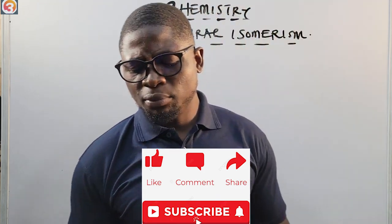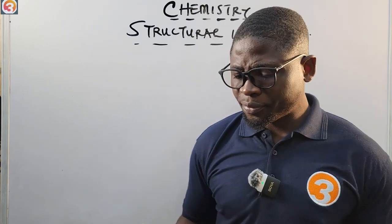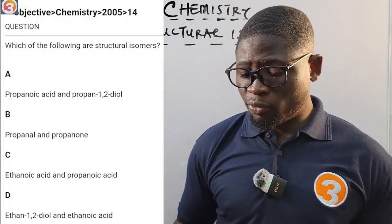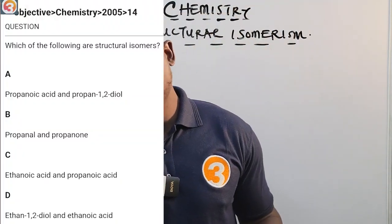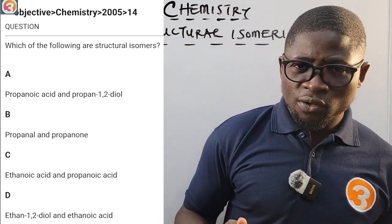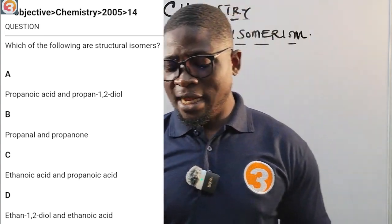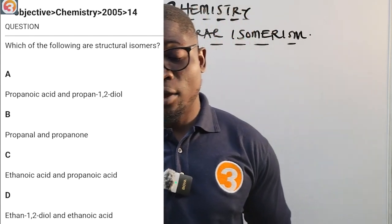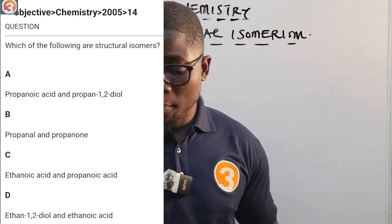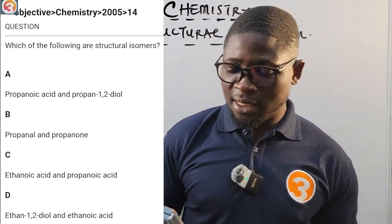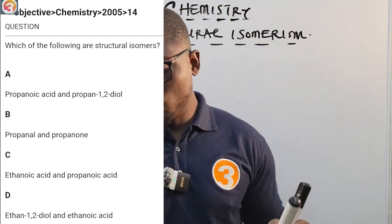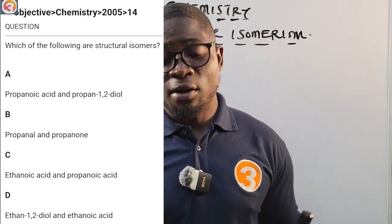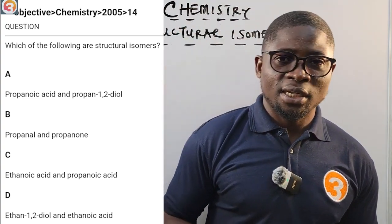Let's see a question from the app — 2005 number 14. The JAM question says: which of the following are structural isomers? A, propanoic acid and propane-1,2-diol. B, propanol and propanone. C, ethanoic acid and propanoic acid. D, ethan-1,2-diol and ethanoic acid.